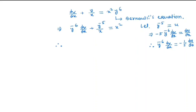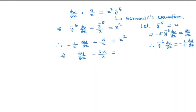Substituting, we have minus 1/5 du/dx plus u/x is equal to x squared. Multiplying through by minus 5, we can write this as du/dx minus 5u/x is equal to minus 5x squared. So we get a linear first-order ODE.